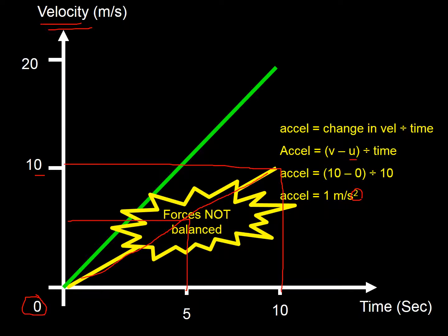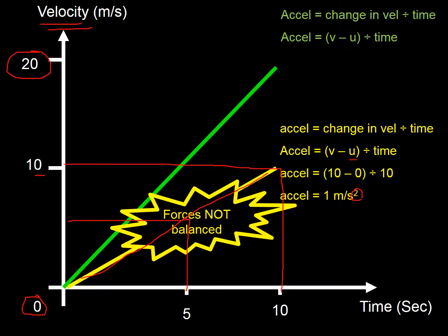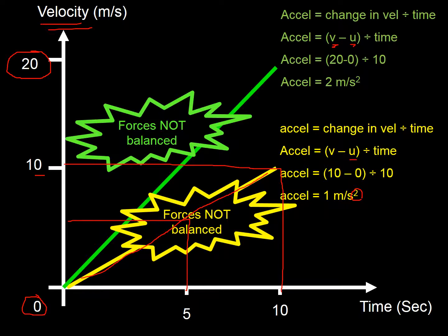Here's another one — faster this time, getting up to 20 meters per second in the same 10 seconds. Acceleration equals change in velocity divided by time: (20 minus 0) divided by 10 gives 2 meters per second squared. It's accelerating, so forces cannot be balanced — the forwards force is bigger than the drag force.